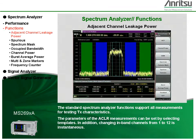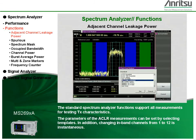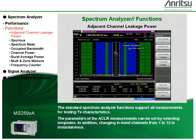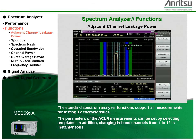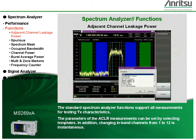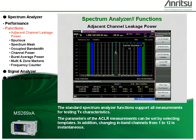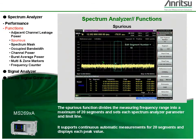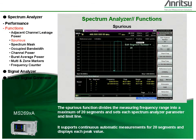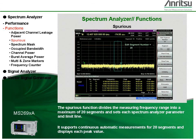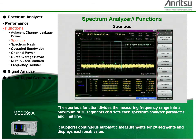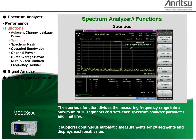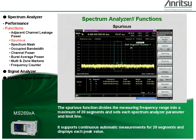The standard spectrum analyzer functions support all measurements for testing transmitter characteristics. The parameters of the ACLR measurements can be set by selecting templates, and changing in-band channels from 1 to 12 is instantaneous. The spurious function divides the measuring frequency range into a maximum of 20 segments and sets each spectrum analyzer parameter and limit line. It supports continuous automatic measurements for 20 segments and displays each peak value.